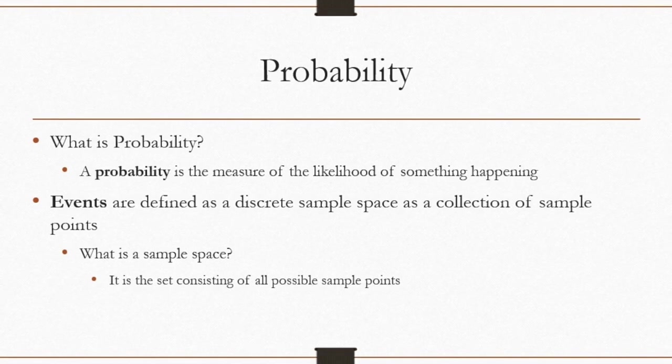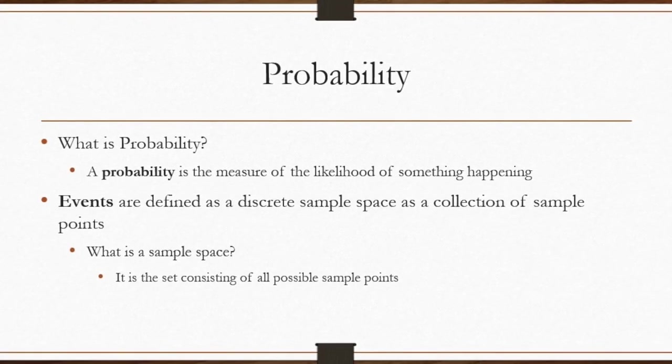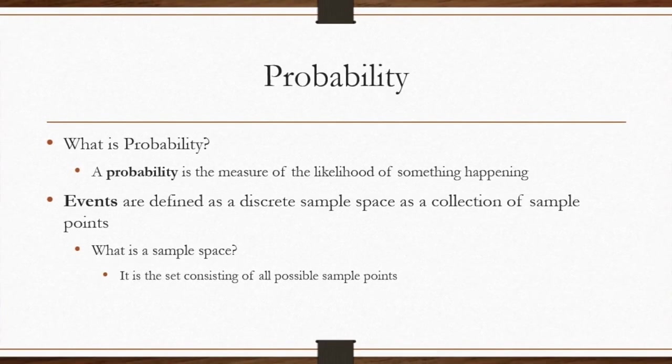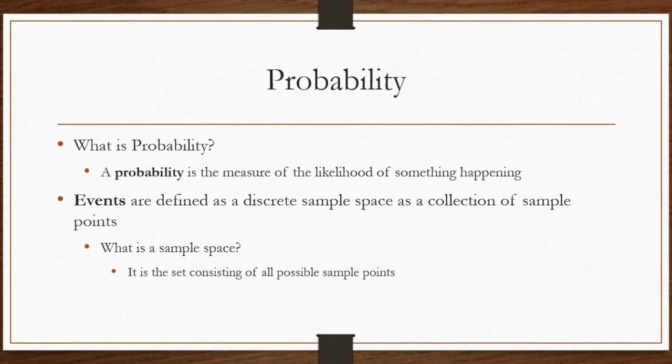So first, we begin with the definition of probability. A probability is the measure of the likelihood of something happening. In other words, it is the ratio between favorable events and the number of total events.